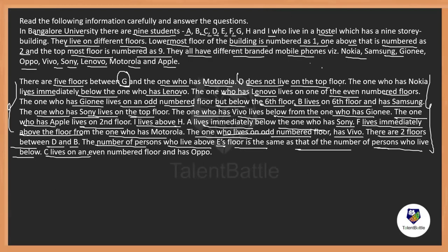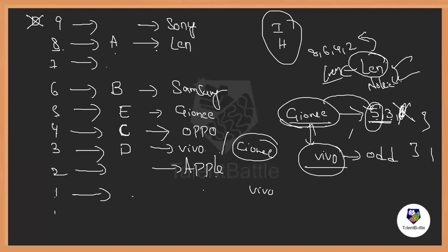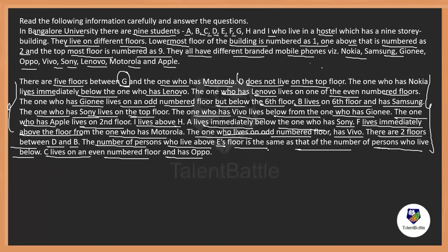The number of persons above E's floor is the same as the number below, which means E must be on the 5th floor — the exact middle of 9 floors. C lives on an even-numbered floor and has Oppo. The remaining even floors are 4th, since 8th is occupied by A, 6th by B, and 2nd by Apple. So C is on the 4th floor with Oppo. Lenovo is on an even floor and Nokia is immediately below Lenovo. The only even floor left is 8th, so A uses Lenovo and the person on the 7th floor uses Nokia.